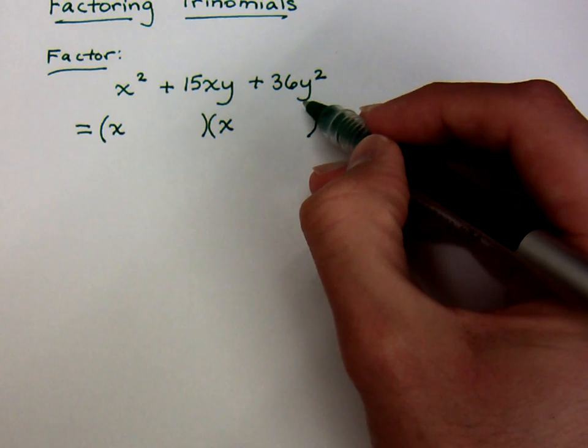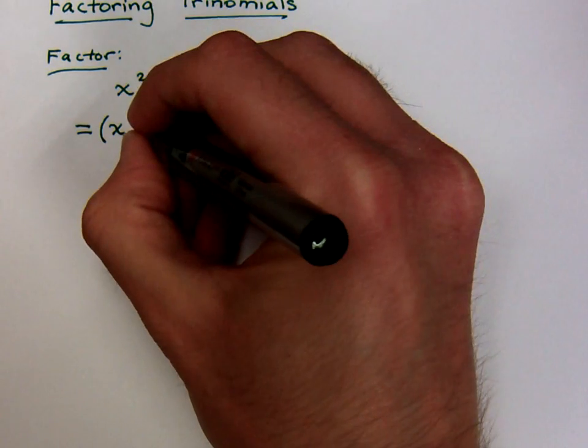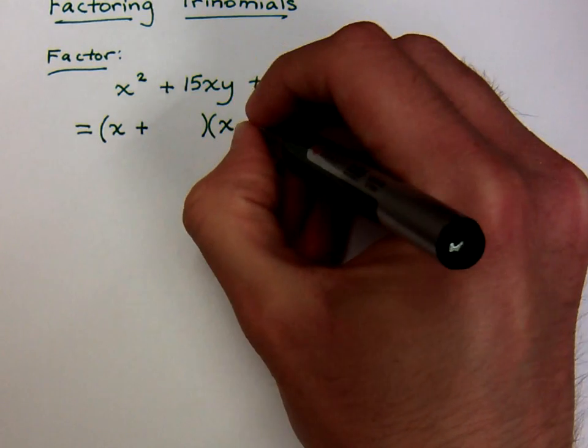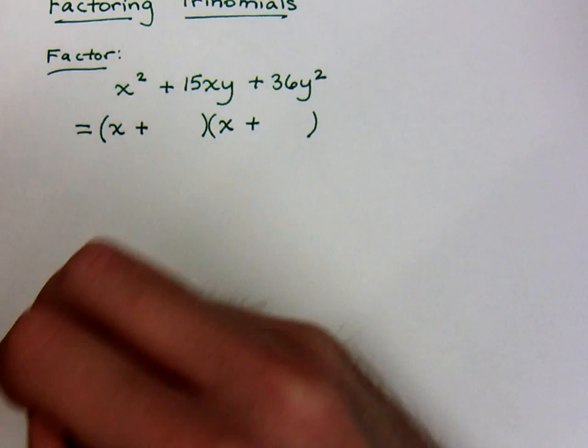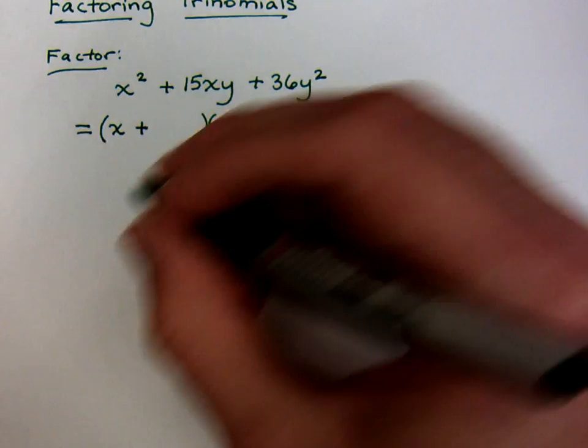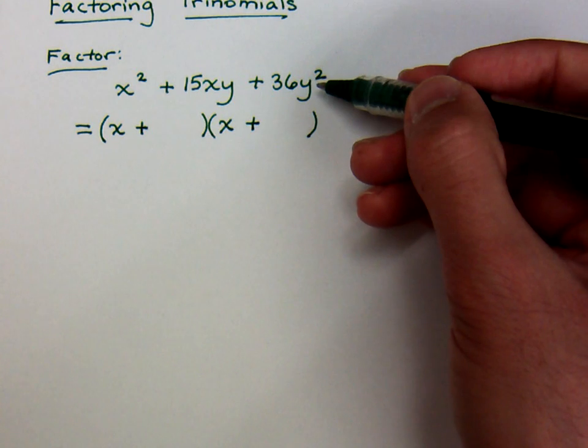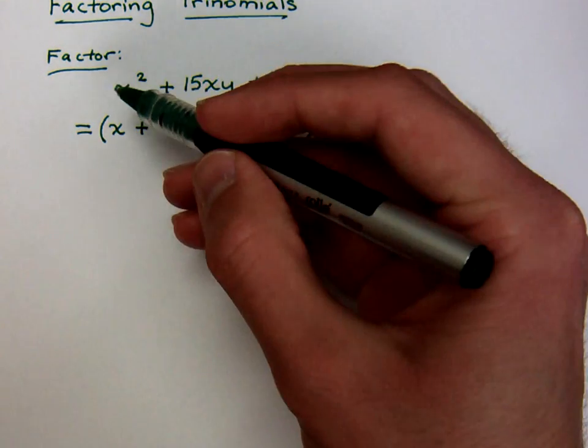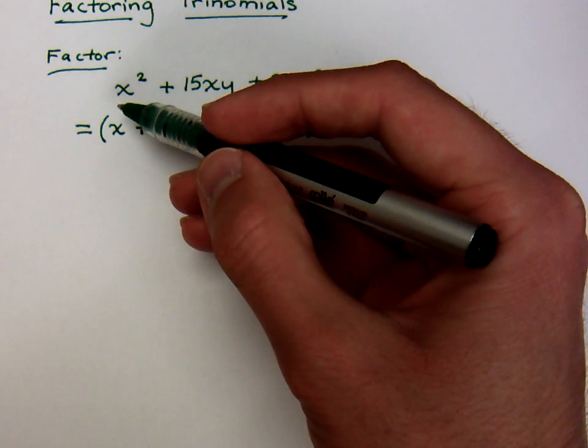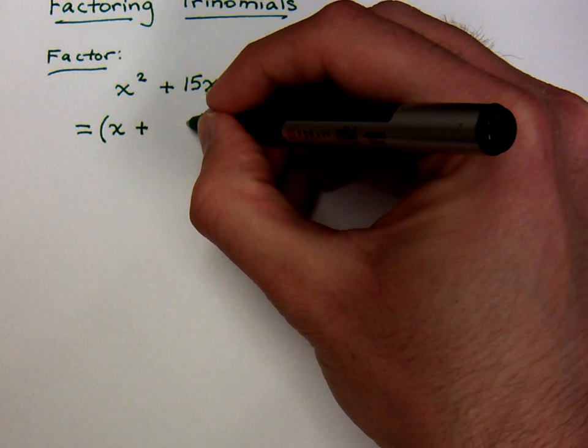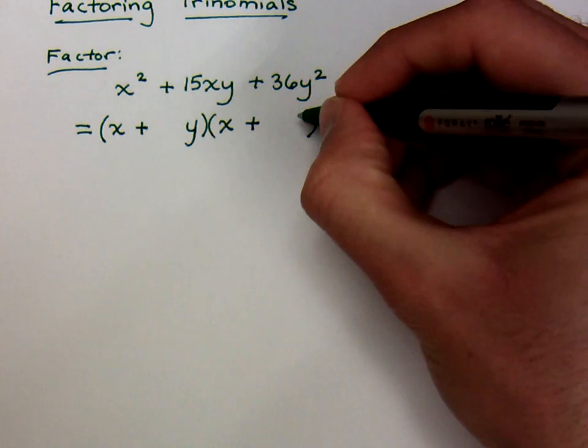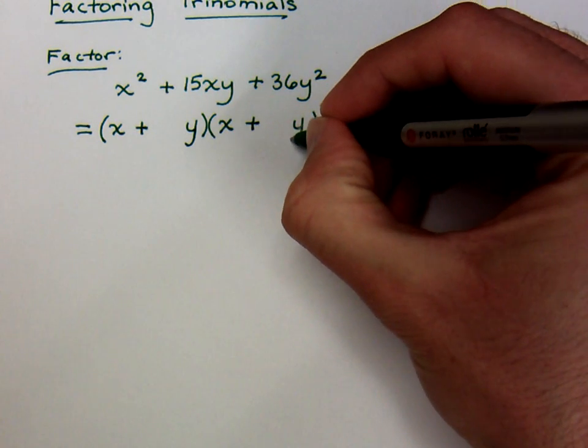Notice that since everything here is positive, then we're going to have positives inside here. Well, so far so good, but what about this guy? Well, the y squared is a lot like the x squared in terms of how you want to break it down. You want to evenly break that guy down, so it's y in each of these binomials.